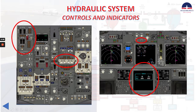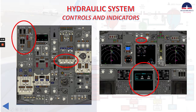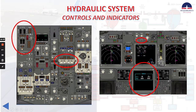Now let's talk about the standby hydraulic lights. We have three lights: low quantity, low pressure, and standby rudder on. The low quantity light is amber and indicates low quantity — less than 50% — in the standby hydraulic reservoir. The light is always armed. The low pressure light indicates that the output pressure of the standby pump is low. This light is armed only when standby pump operation has been selected or the automatic standby function is activated. The standby rudder on light indicates the standby rudder system is pressurizing the standby rudder power control unit, or PCU.